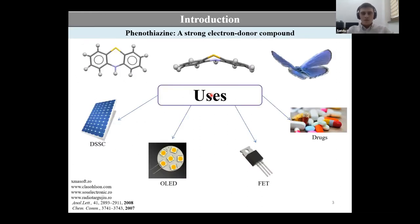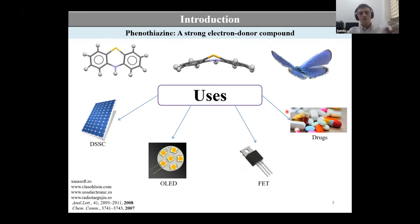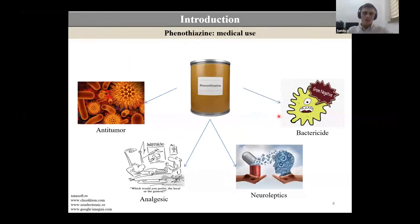Phenothiazine is a fused three-cycle system which has a band shape named butterfly geometry, and due to its electron-donating properties this compound is used for synthesis of derivatives used in optoelectronics such as dye-sensitized solar cells, organic light-emitting diodes, field effect transistors, and also to obtain derivatives for drug formulations. Due to its versatile properties, phenothiazine presents good activities as antitumor agents, analgesics, neuroleptics, and bactericides.